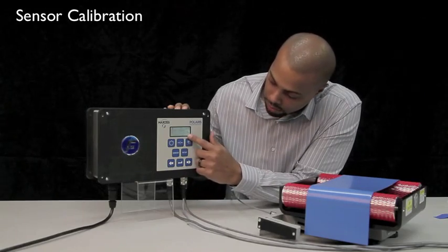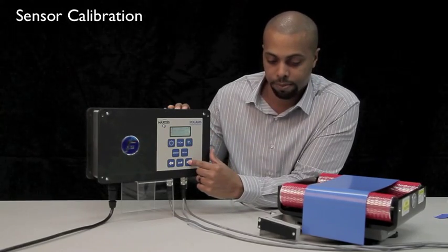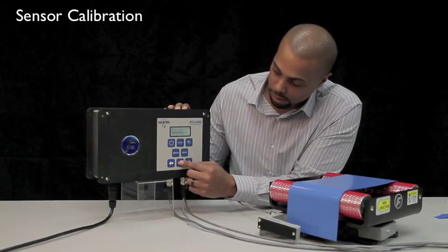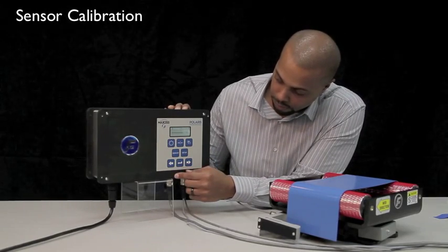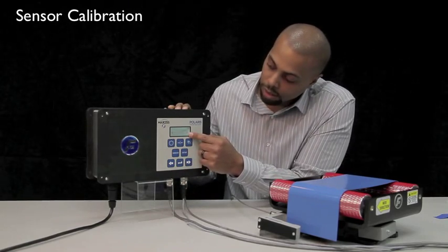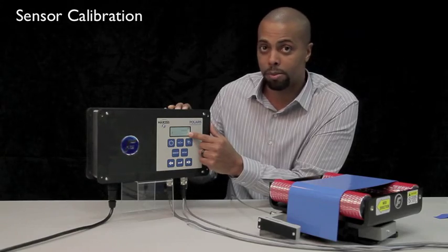Now the screen will tell you to cover your sensor completely. Then press enter. Once the calibration is successful, the Polaris will escape back out to your main menu.